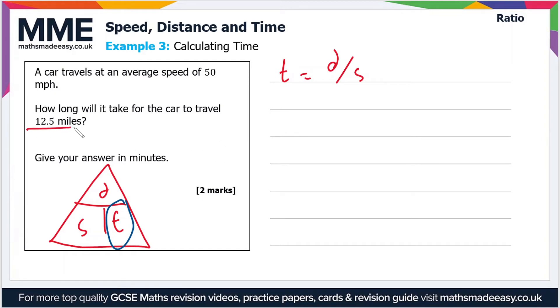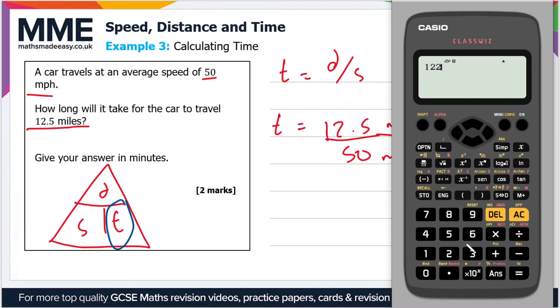Now the distance is 12.5 miles, the speed is in miles per hour. So if we divide 12.5 miles by 50 miles an hour, so that's miles divided by miles per hour. Then we end up with, if we put it in the calculator, 12.5 divided by 50, 0.25 hours.